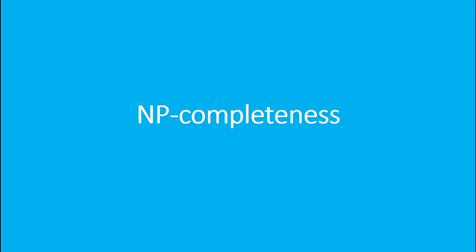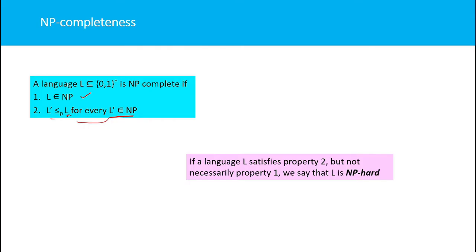Now we will prove certain problems are NP-complete. A language L that belongs to {0,1}* — where variables in the language are just zero and one — is NP-complete if and only if L belongs to NP, and we must be able to reduce every problem that belongs to NP to L.